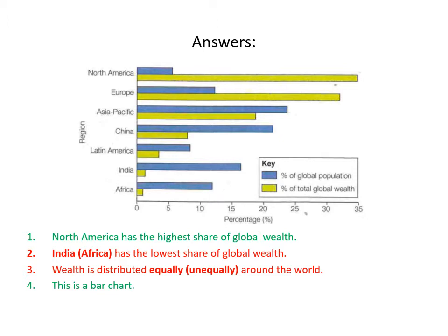Look at China — an individual country that has significantly more of the global wealth than Africa or India. A country against a continent suddenly puts this into perspective. Statement three, 'wealth is distributed equally' — no, it is not. It is unequal around the world, meaning that wealth is not equal. Some parts of the world have more wealth, such as North America and Europe, than others, such as Africa and Latin America.